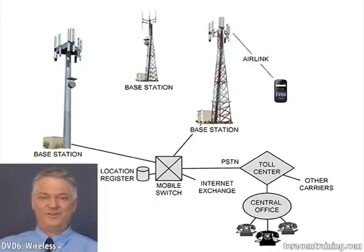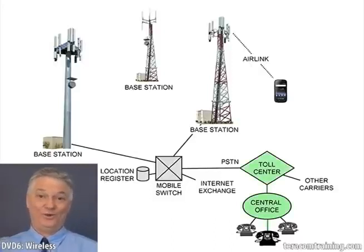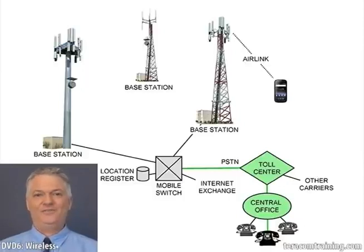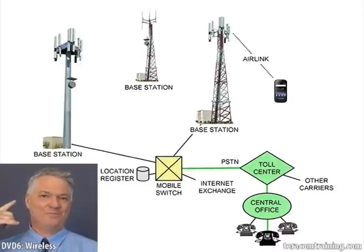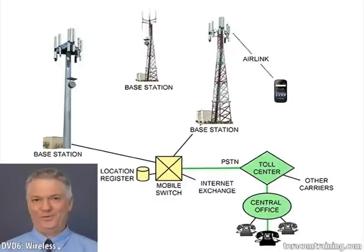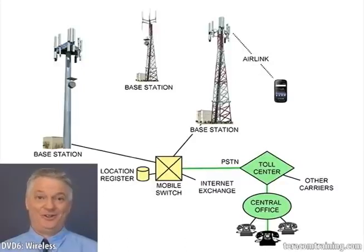If somebody calls you from a landline, they pick up the phone, punch in some numbers, and that call goes over their loop to their central office, to a toll center, and then to the cellular telephone company — which looks like a central office to the telephone system. The phone call is terminated on the mobile switch. The mobile switch then looks in the location register to see which base station that phone last registered on — in other words, what value it reported as its Location Area Identity the last time it talked to the switch.